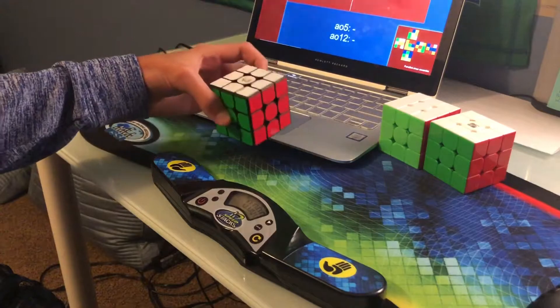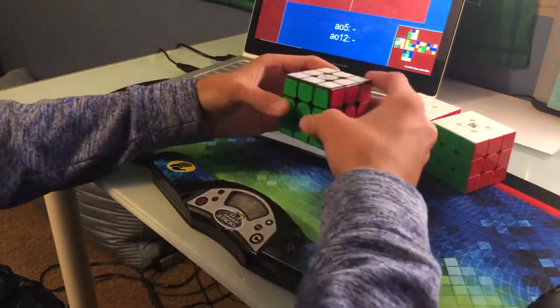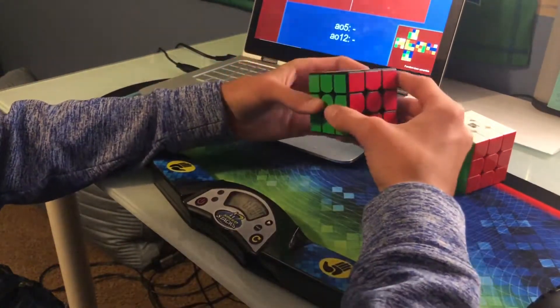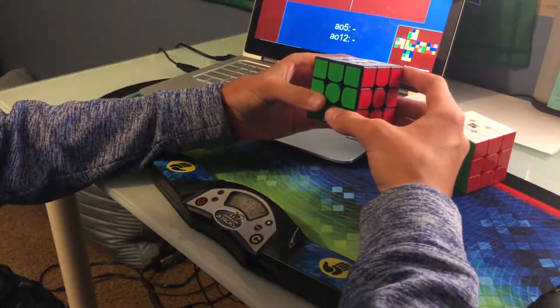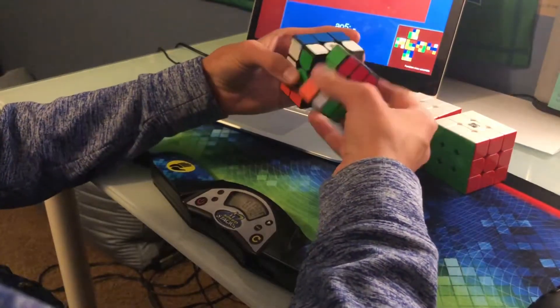So now we will move on to our last cube for this video, which is the Yushin Little Magic. No magnets, no nothing, just $5 on thecubicle.com. So let's see how it performs.